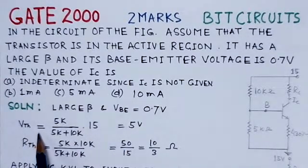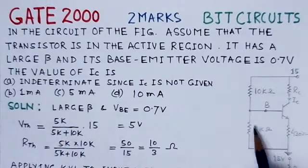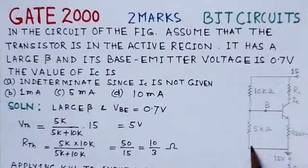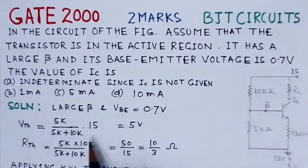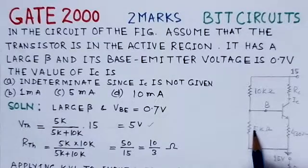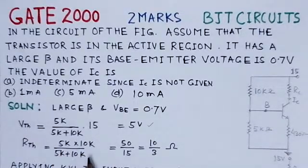The Thevenin's equivalent voltage source VTH is the voltage across 5k, which is 5k over (5k + 10k) multiplied by 15 volts — so VTH equals 5 volts. The Thevenin's resistance RTH is the parallel combination of 5k and 10k, calculated as (5k × 10k) / (5k + 10k).